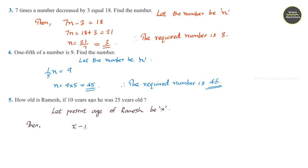That is, X minus 10, he was 25 years old. So, by transposing this minus 10 to RHS, it becomes X is equal to 25, and minus 10 go to RHS, it is plus 10. Or, it can be written as X is equal to 35. Therefore, Ramesh is 35 years old.